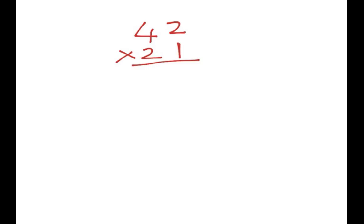First of all we have this problem 42 times 21, and the best way to do this is to do 2 times 1, which is just 2. Then do 4 times 1, which is 4. Then you've got to put the golden zero in, just beneath the 2.